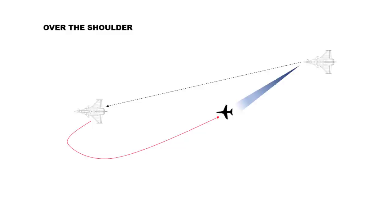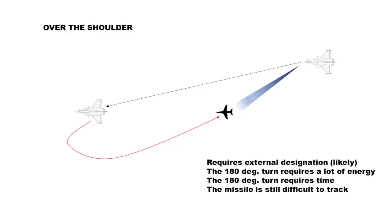The objection is that there do exist missiles, air-to-air missiles, that can be launched over the shoulder, that is, can do a 180 degrees and attack a target behind the plane. Well, apart from the fact that this is normally done with someone else actually providing the fire solution and tracking the plane.